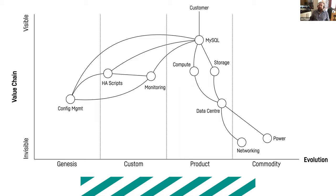As you go further to the left you get to more customized things. In the far left 'genesis' area are config management scripts — you're writing those yourself, responsible for putting the code together. In 2009 you'd be writing your own config management scripts, customizing HA scripts and monitoring setups, and buying compute and storage as products placed in a data center that provides commodity power and networking.